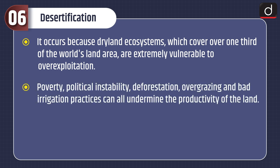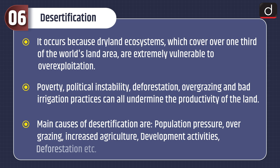Poverty, political instability, deforestation, overgrazing and bad irrigation practices can all undermine the productivity of the land. The main causes of desertification are population pressure, overgrazing, increased agriculture, development activities, deforestation, etc.